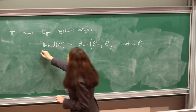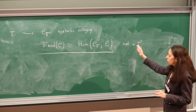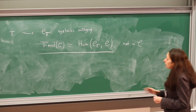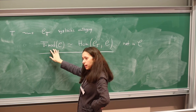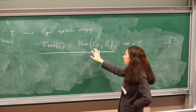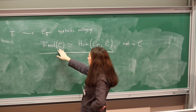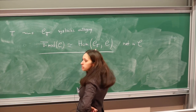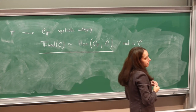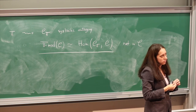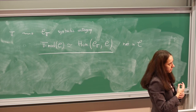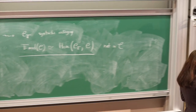This equivalence means that models become functors. You have a universal model because nothing prevents you from taking C equal to the syntactic category C_T itself. The equivalence is not an isomorphism but an equivalence of categories, where the right-hand side is a category of functors with natural transformations as morphisms — so it is naturally a 2-category.